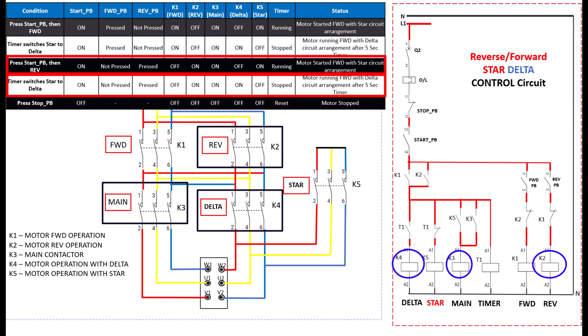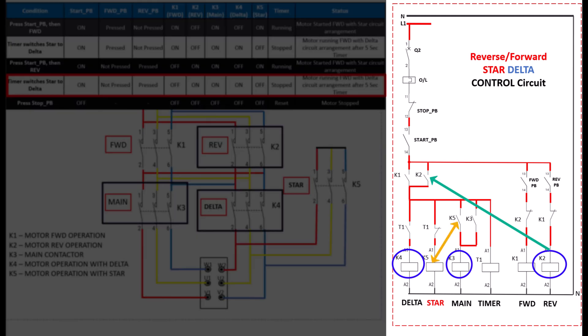Look at the control circuit. It has an interlock that ensures K3 main contactor and K5 star contactor engage only when K2 reverse contactor is energized. If the motor direction is not selected, the motor will not start, ensuring proper functionality and safety.